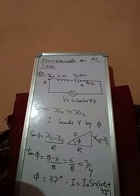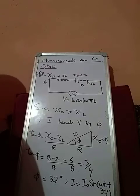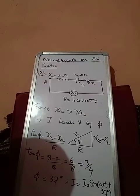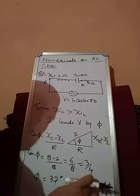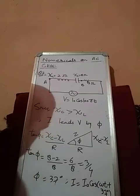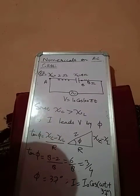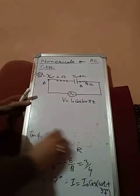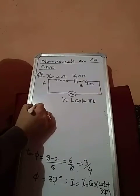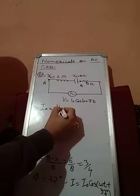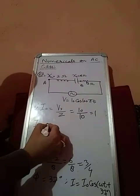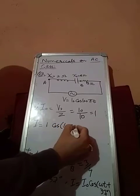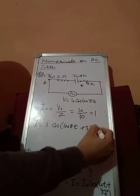Now what will be the equation of current? You should know the peak value here. Since voltage is given in cos, we will keep current also in cos. Therefore, first we will find I naught. I naught will be V naught by Z. V naught is 10, Z you also calculated is 10, so it's 1. So current will be I naught equals 1 cos omega 100 pi t plus 37 degrees. This is the current equation.